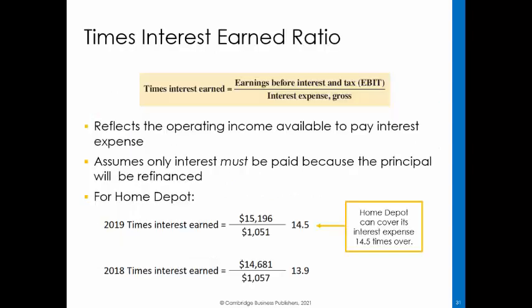The times interest earned ratio reflects the operating income available to pay interest expense. The underlying assumption is that only interest must be paid because principal will be refinanced. Management and lenders want this ratio to be sufficiently high so that there is little risk of default. Home Depot's 2019 times interest earned ratio is 14.5, compared to the 2018 ratio of 13.9, indicating increasing ease of interest payments from operating income.